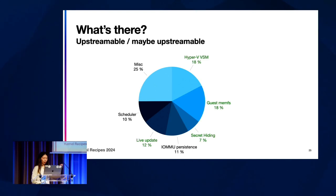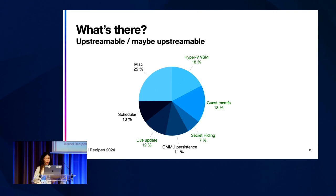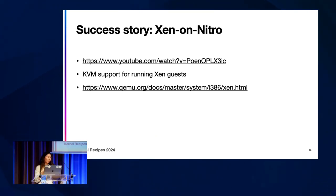From the chart I showed, we're already trying to find the path for these projects. IOMMU persistence for page tables will come after getting agreement on the kcho and guest memfd. Scheduler stuff, we're looking at recent proposals for dealing with overcommitted platforms. Miscellaneous patches we're also looking at how to make into nice series. But we also have success stories — the Xen on Nitro project, led by David Woodhouse and Paul Duran.